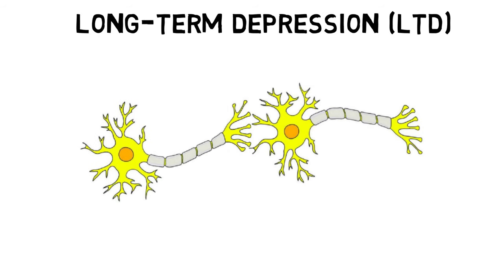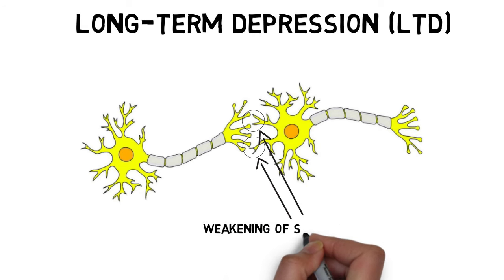LTD is a process by which synaptic connections between neurons become weaker. It is the opposing process to long-term potentiation. Although the functions of LTD are not completely understood, it's thought to be important to memory formation, perhaps by resetting previous synaptic changes to allow for new memories to be formed via long-term potentiation.